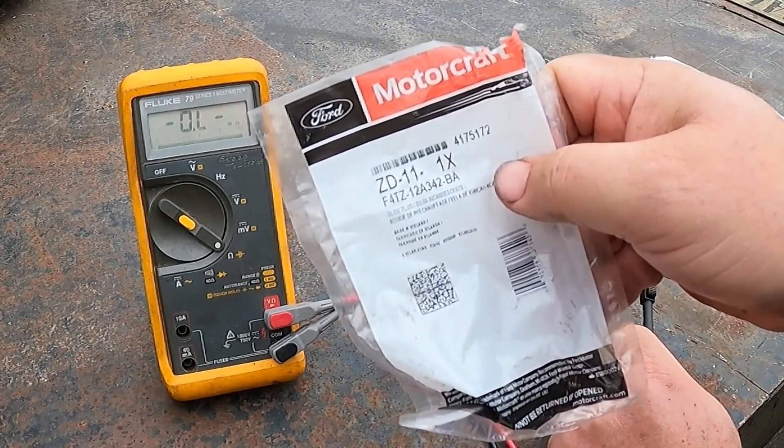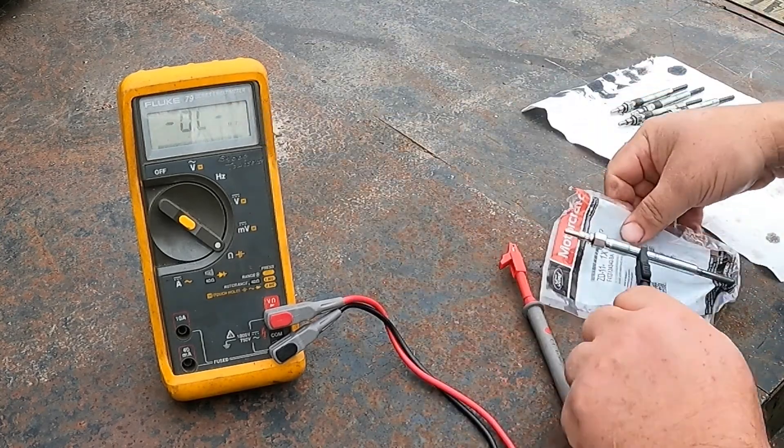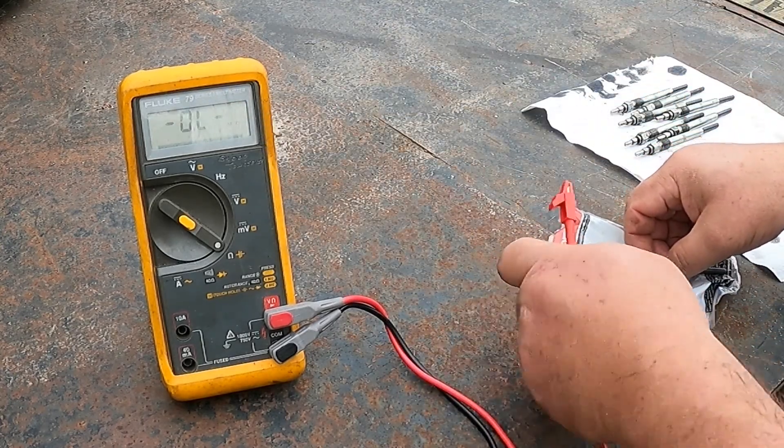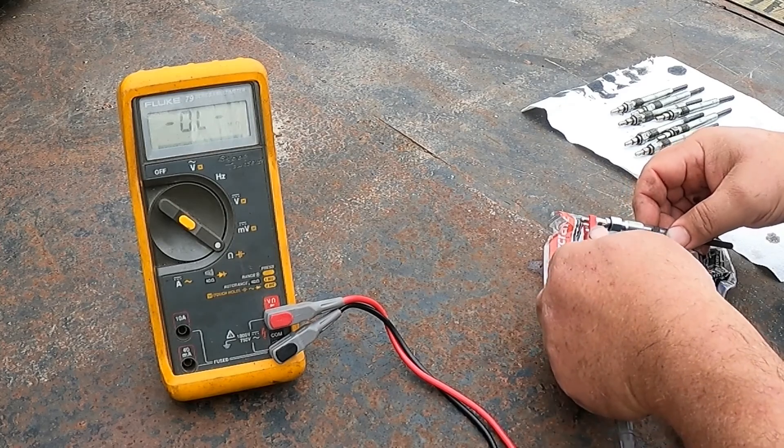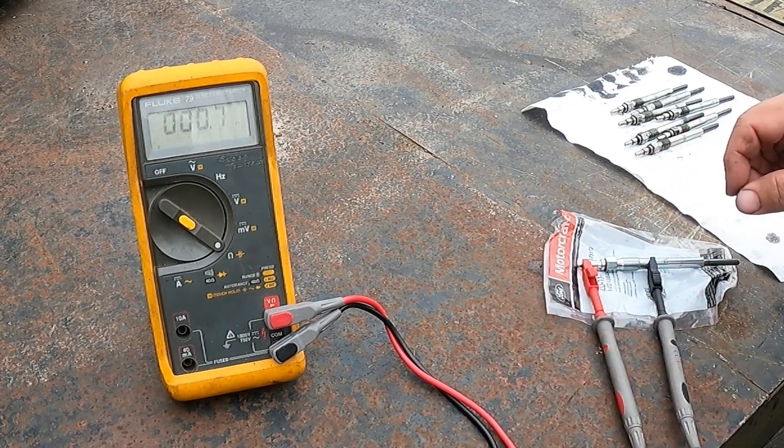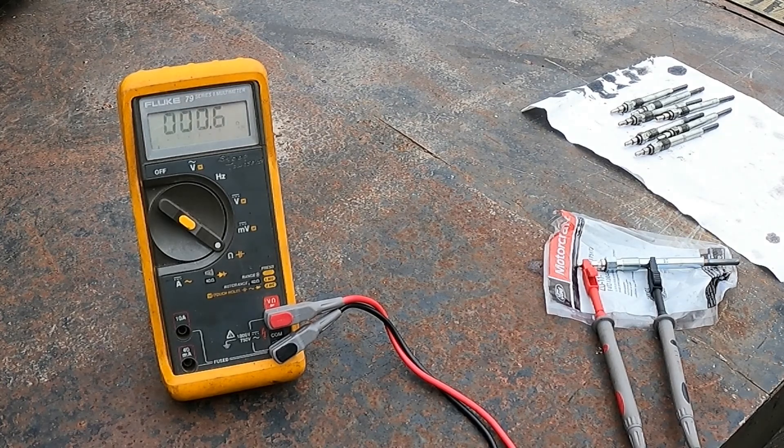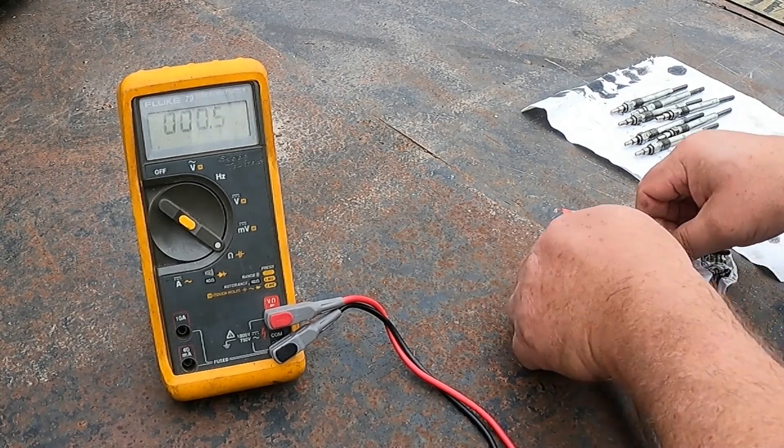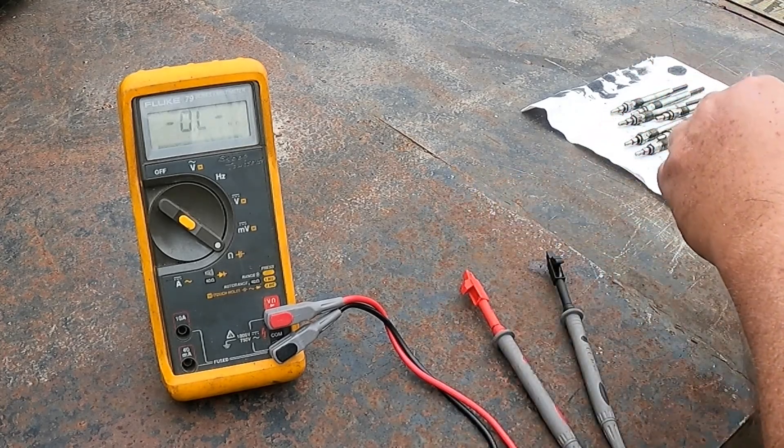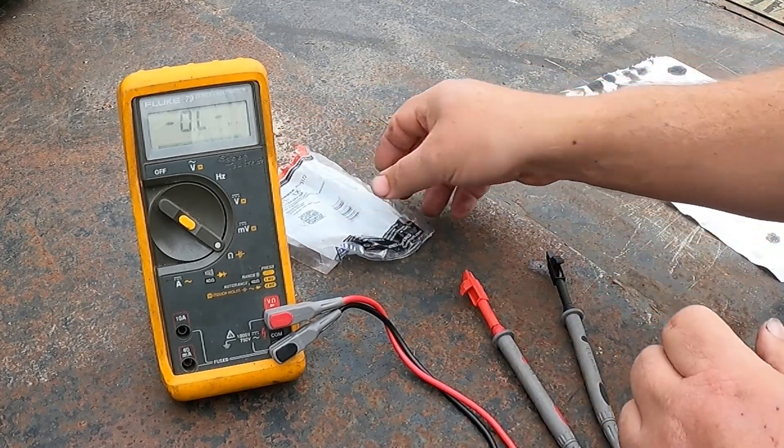This is the Motorcraft number for your glow plugs. They run about twelve dollars. So we clamp our ohm meter onto the body and the tip—just the tip, mind you. We're looking at 0.6 ohms on that one. That's a brand new one, so that's going to be our reference.